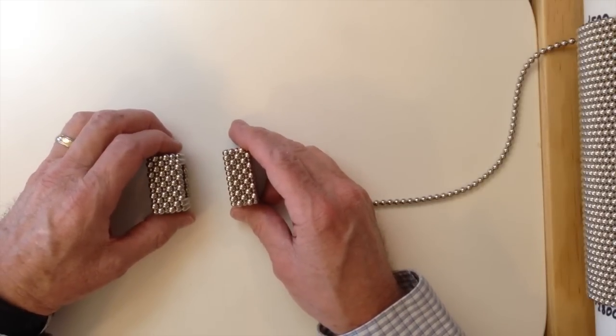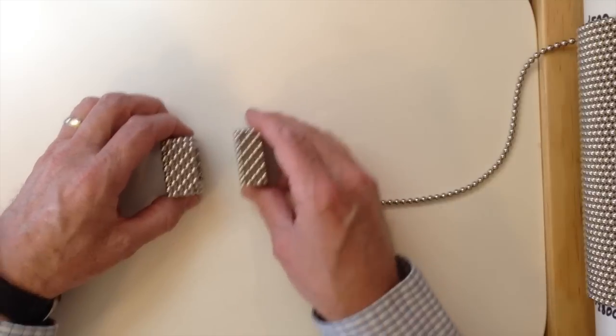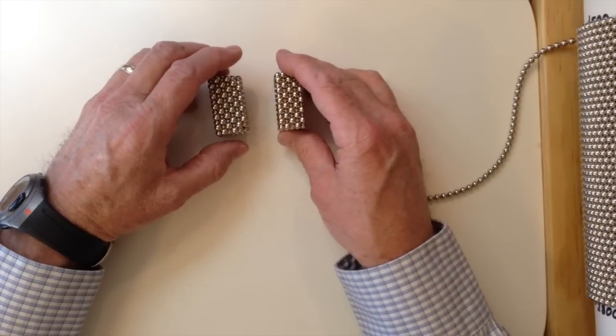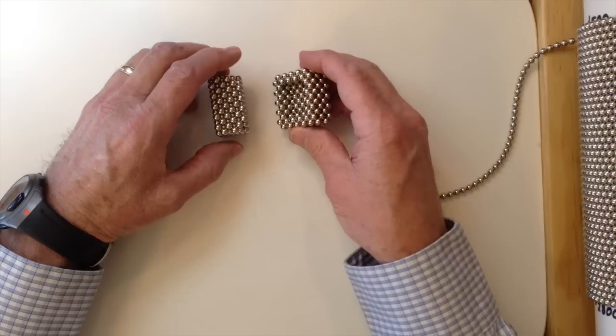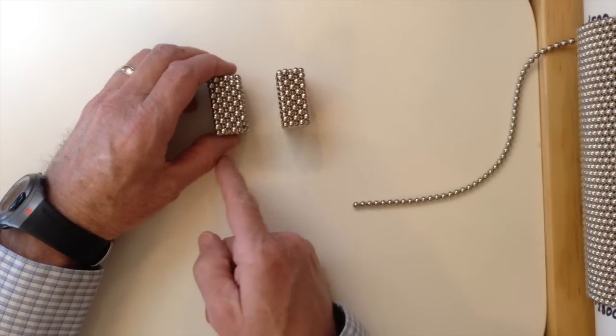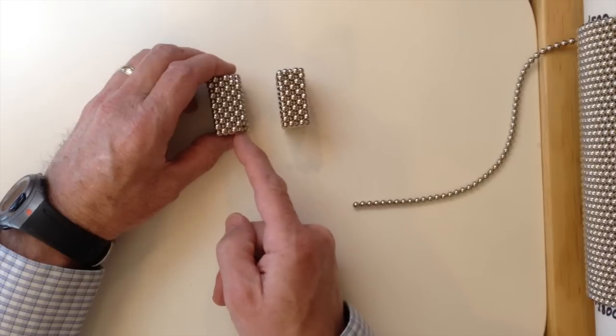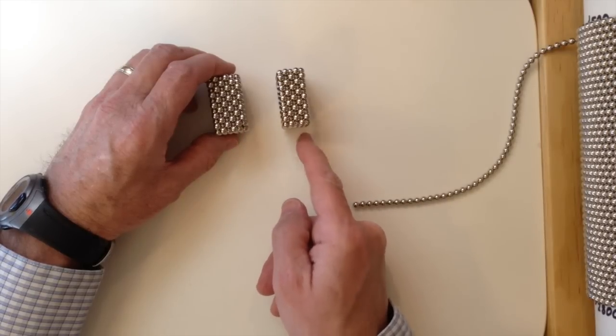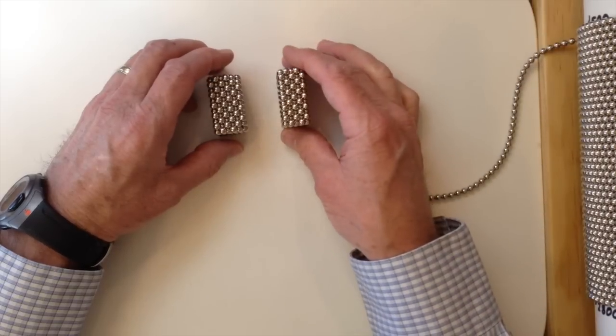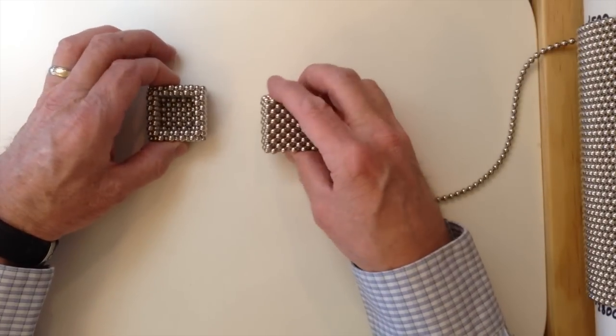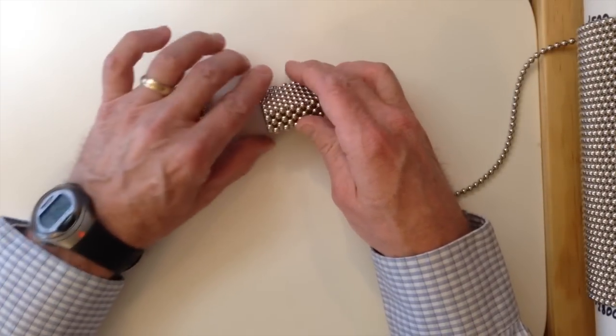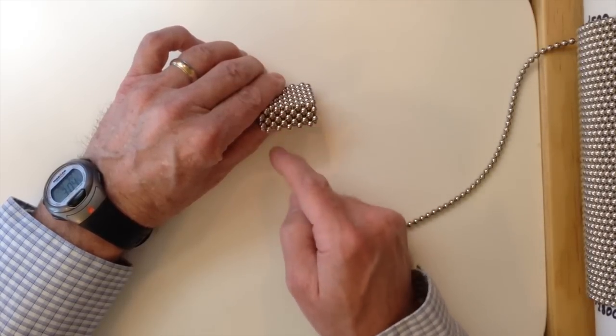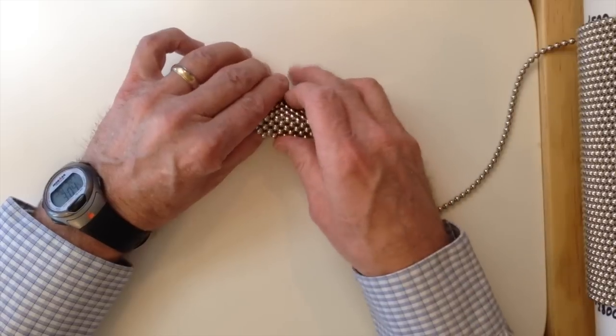So now, we have, we're just counting layers, we've got 1, 2, 3, 4, 5, 6, 7, 8, 9, 10. I want to make sure that that coincides with the number of layers this way, 1, 2, 3, 4, 5, 6, 7, 8, 9, 10, 11, and sure enough it does.